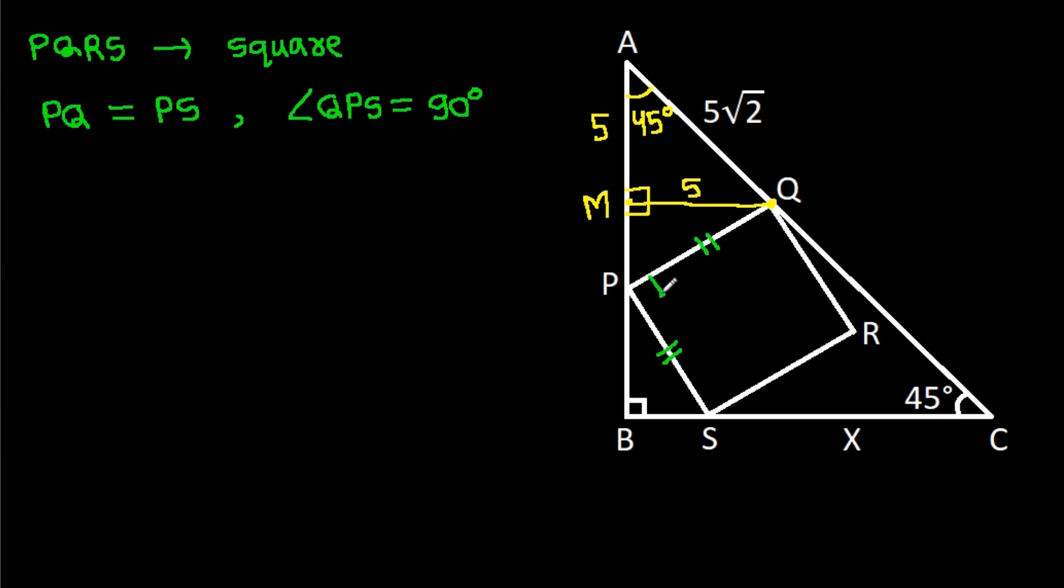This angle will be 90 degrees. So suppose this angle is alpha, then this angle will be 90 degrees minus alpha, that will be beta. And this angle will be again alpha.